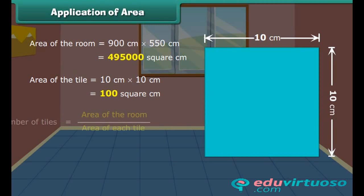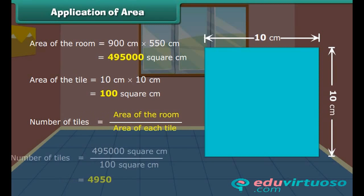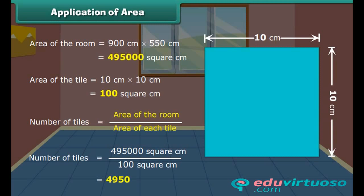We can find the number of tiles needed by dividing area of the room by the area of each tile. Thus, number of tiles needed is equal to 4,950.